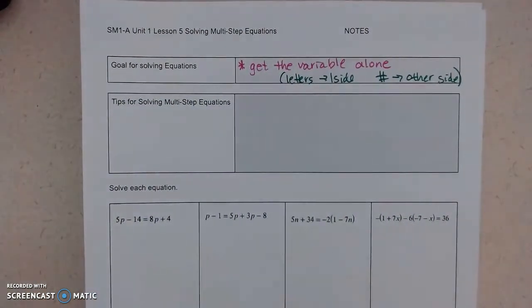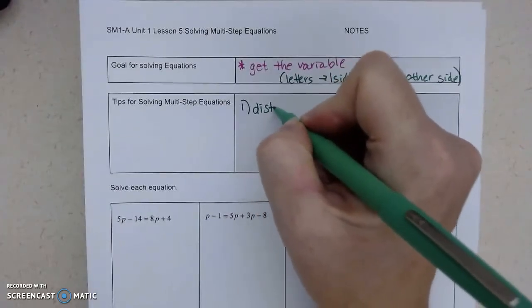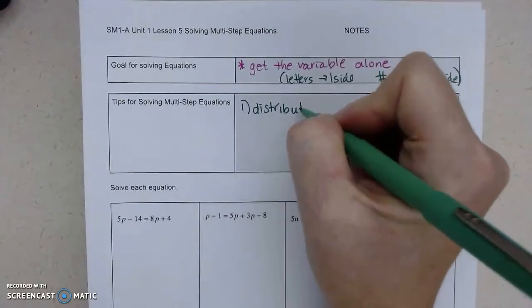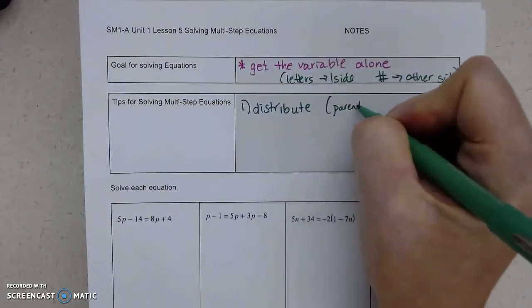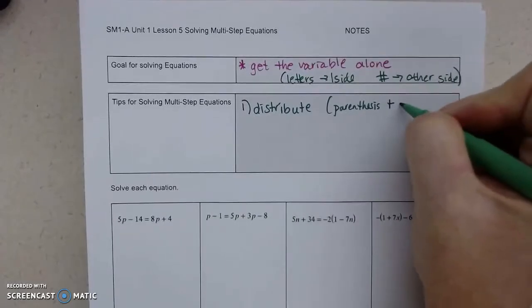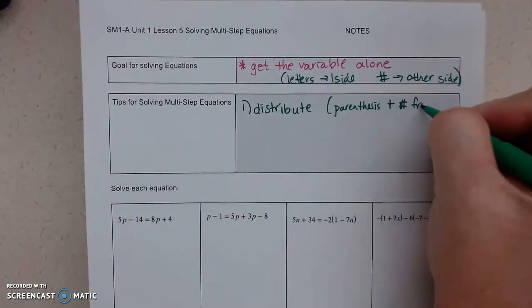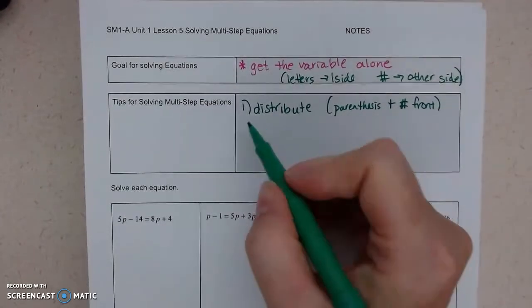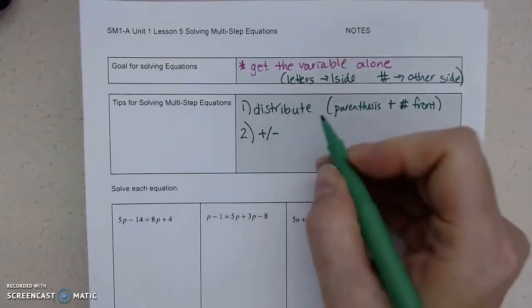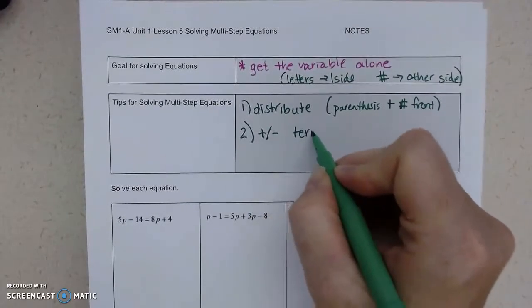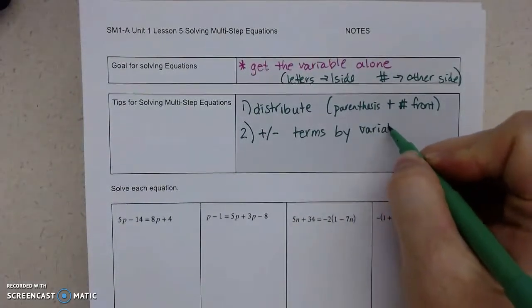Okay, so some tips. The first thing is you want to distribute if there is parentheses and a number outside. So you'll see parentheses and a number in front, or a negative sign, number in front. Next, remember, we've reversed the order of operations. So you're always going to add or subtract the terms that are by the variable using the inverse operations.